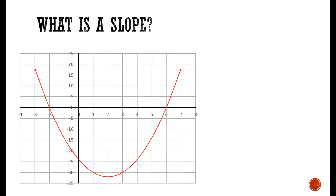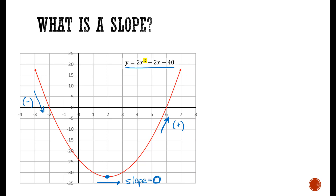Now, what about nonlinear functions, such as this quadratic? Here we have the equation y = 2x² + 2x − 40. We call this a quadratic or second-order polynomial, as the highest exponent for x is to the power of 2. As we examine this function, we can see that we start with a negative slope — from left to right, it's going downward. Eventually we hit some minimum value, and then it goes back to being an upward, positive slope. At the minimum, the slope is equal to 0. So we go from negative to positive as the direction of this quadratic function changes.